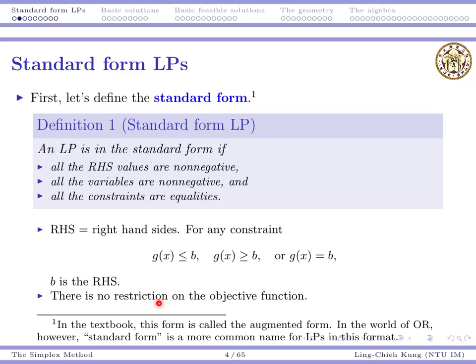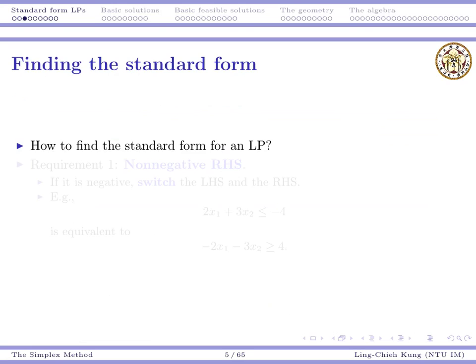One thing to mention is that there is no restriction on the objective function. We talked about constraint right-hand sides, constraint format, and variables, but nothing about the objective function. You may have either maximization or minimization linear programs in standard form.